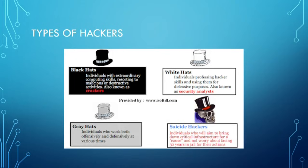Now, types of hackers. Black hats are individuals with extraordinary computing skills that use their skills for malicious or destructive activities — they're really using their skills for wrong and offensive purposes. We then have white hats. White hats are professional hackers who have a similar skill set to the black hats, but they use their skills for security analysis and basically the defensive side of the spectrum. We then have gray hats — hackers who are in the middle of the playing field, on the fence, both black hat and white hat.